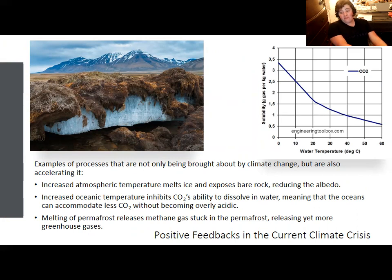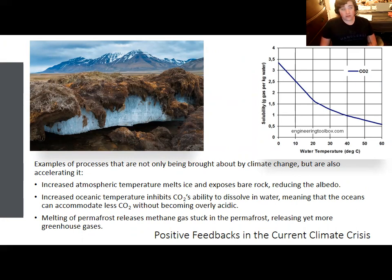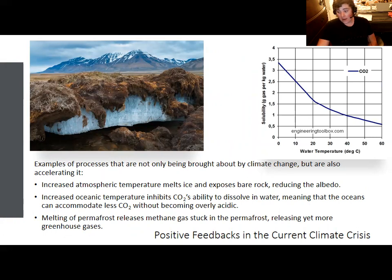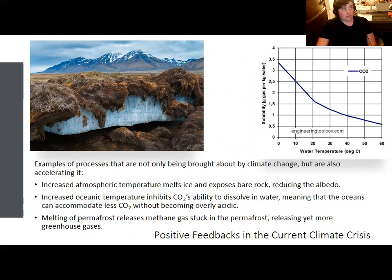A number of positive feedbacks are occurring with the current climate crisis. The increased CO2 in the atmosphere and resulting increased temperature is causing glaciers to melt. White glaciers have a higher albedo than the dark rocks underlying them — rocks absorb a lot more radiation than glaciers, which reflect a lot of it. As the ice melts because it's getting warm, the Earth gets even warmer because the ice that reflected radiation is gone. Another example: CO2 dissolves better in colder water, but seawater is getting warmer from global warming, making it harder for CO2 to remain dissolved in the ocean and accelerating ocean acidification.